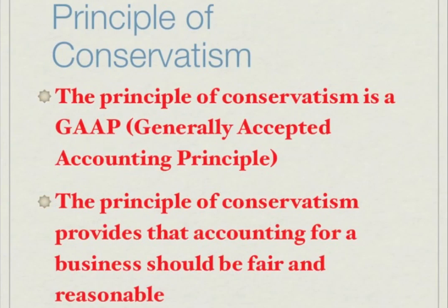The principle of conservatism is a generally accepted accounting principle (GAAP). It provides that accounting for a business should be fair and reasonable. For example, if there are two outcomes with a similar chance of occurrence, you recognize the transaction with the lower value — essentially the worst-case scenario. Another example: if there is uncertainty about whether there is a loss or not, you record a loss. This is the principle of conservatism.